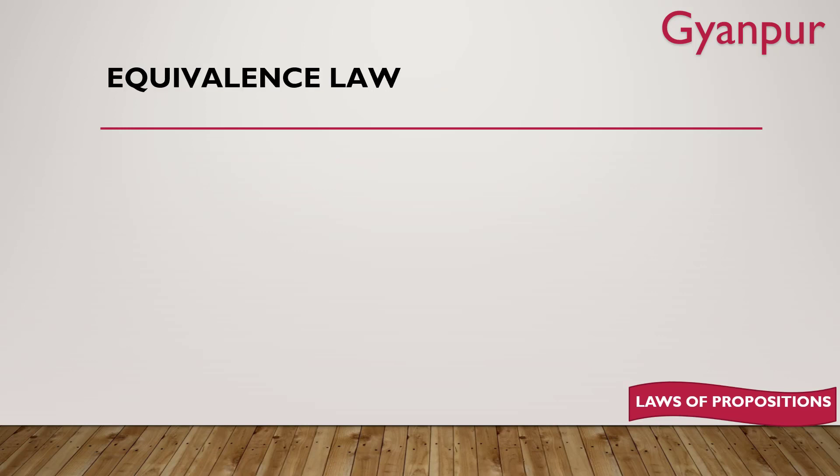Now coming to equivalence law, which is the last law of laws of propositions. If you have P → Q and Q → P joined with AND, this can be replaced with P ↔ Q — a double implication. So (P → Q) AND (Q → P) equals P ↔ Q. This is known as equivalence law.